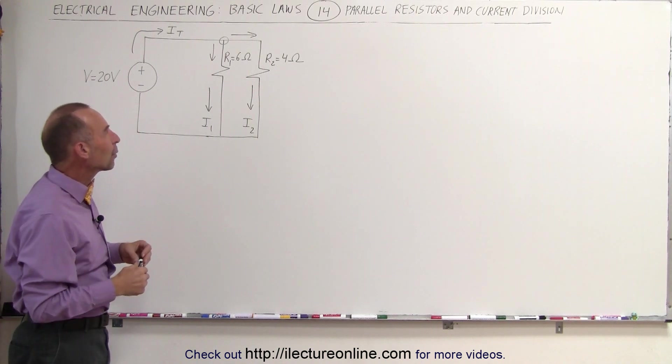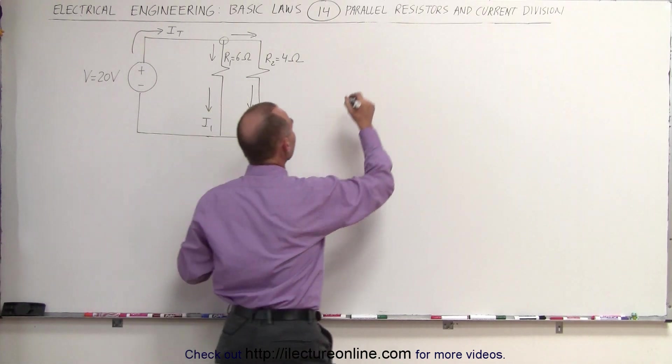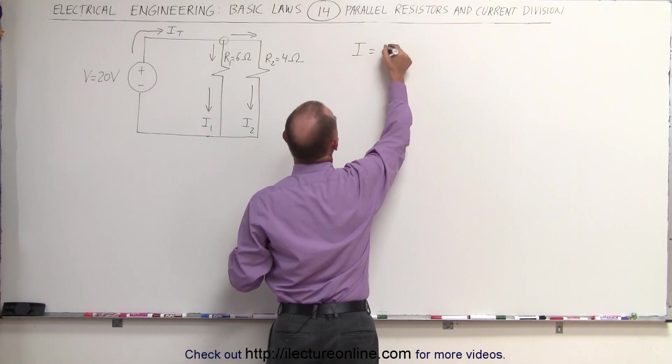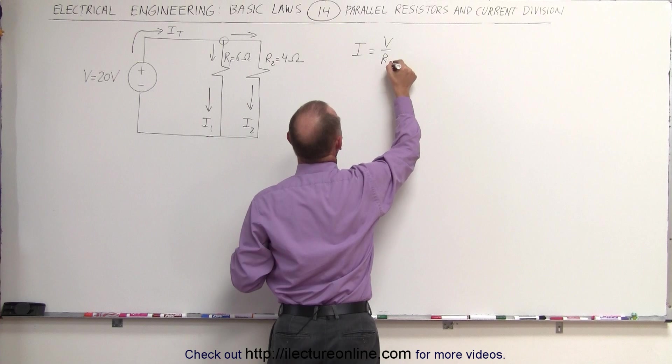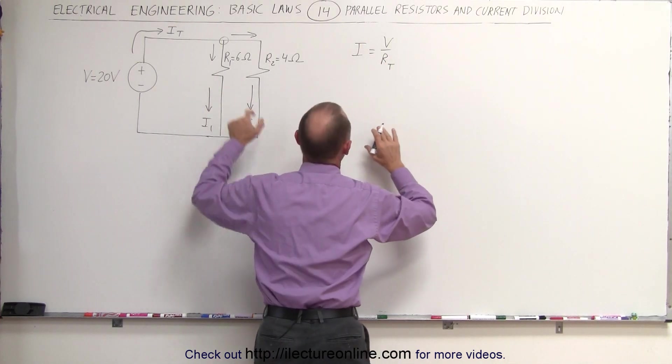To figure out how that works, let's first find the total current in the circuit using Ohm's law. We know that I is equal to V over R. In this case, that would be R total. So we need to find R total in this parallel circuit.